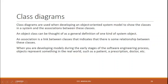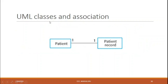When developing models in the early stages of the software engineering process, objects represent something from the real world — for example, patient, record, prescription, and doctor in the mental health care system. This illustrates a real-world example of developing a class diagram. In UML classes and associations, patient and patient record show a one-to-one relationship between objects of the classes.